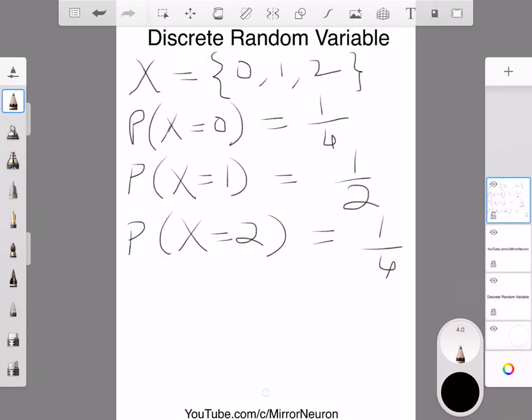Now interestingly, we can plot this kind of activity. So our x-axis will have the random variable.